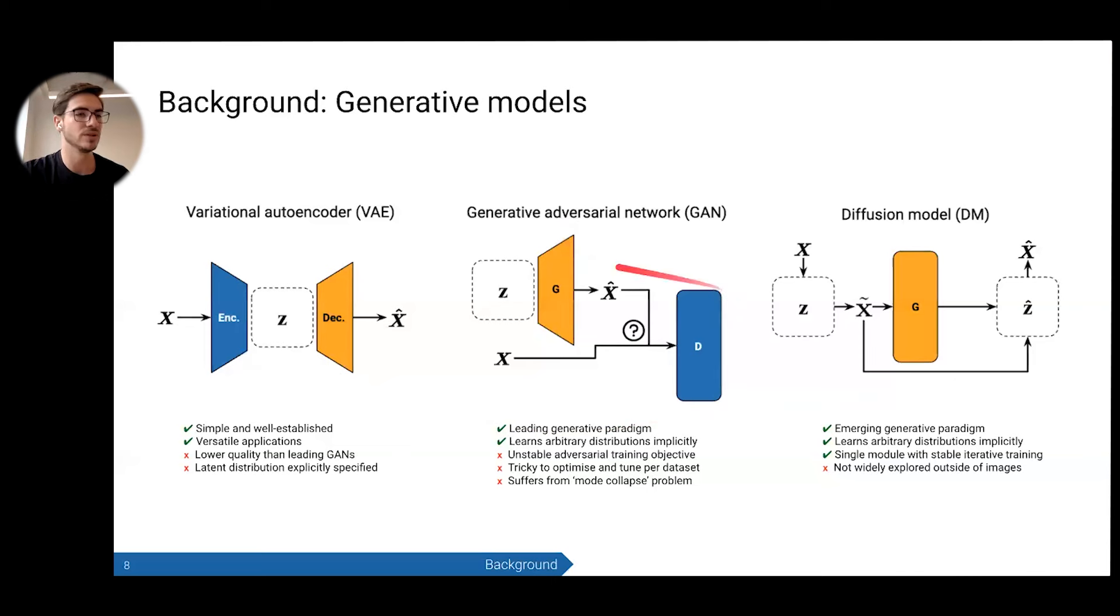GANs also make use of two neural networks, but this time they're trained adversarially. The generator is sampling from random noise to produce samples that hopefully are able to fool the discriminator. These are popular and very effective. They learn arbitrary distributions implicitly, but they have this really unstable adversarial training paradigm. And they often suffer from this big issue called mode collapse, which is where they fixate on the most frequent clusters of data and don't really sample anything else. Both of those are huge problems for creating synthetic data with privacy.